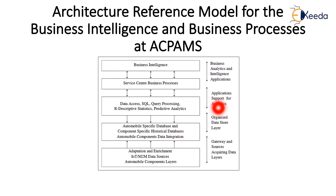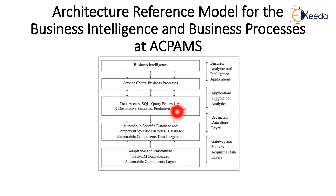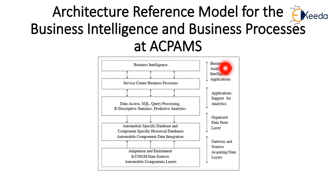The third layer is application support for analytics, using SQL query processing, data access, predictive analytics, and descriptive statistics. Once data is collected and organized, it is processed here. The fourth layer is business intelligence and the service center business process, where business analytics and intelligent applications are produced with the help of data analytics, SQL, and query processing.